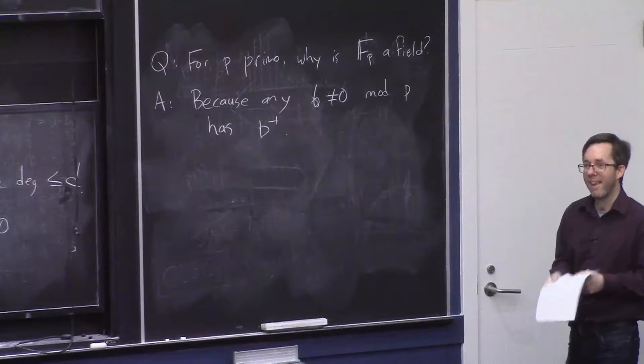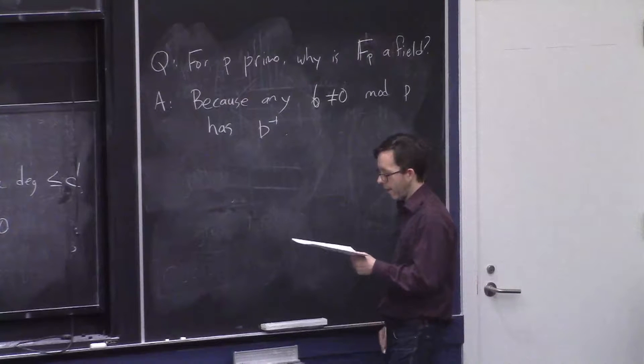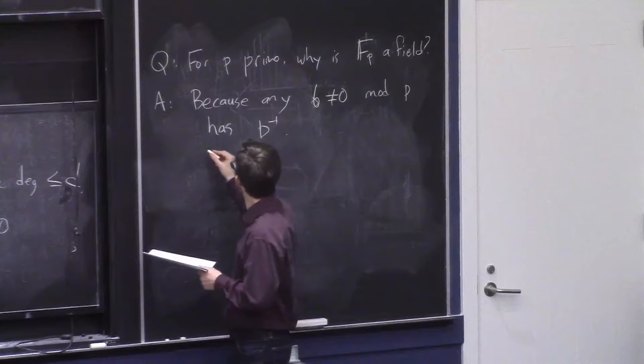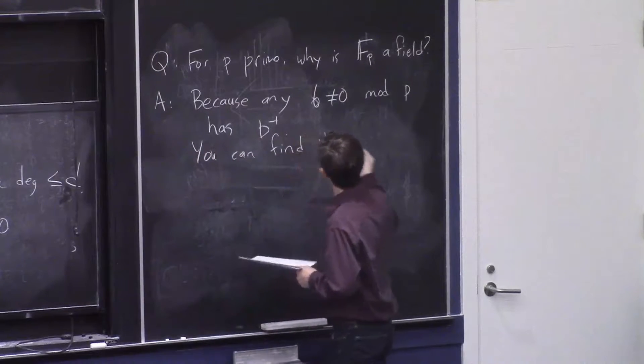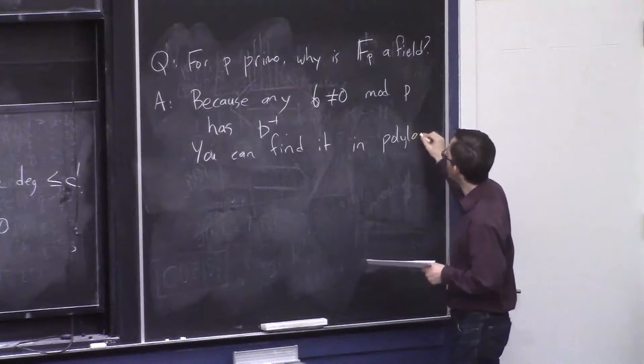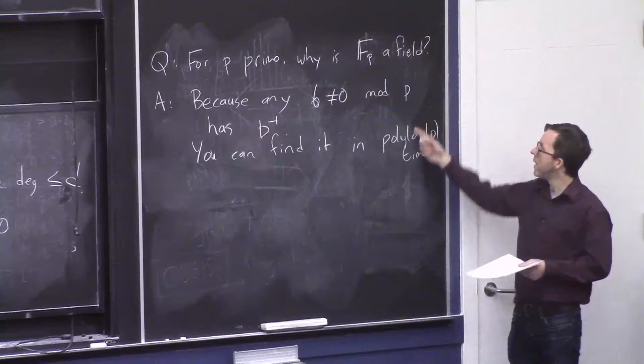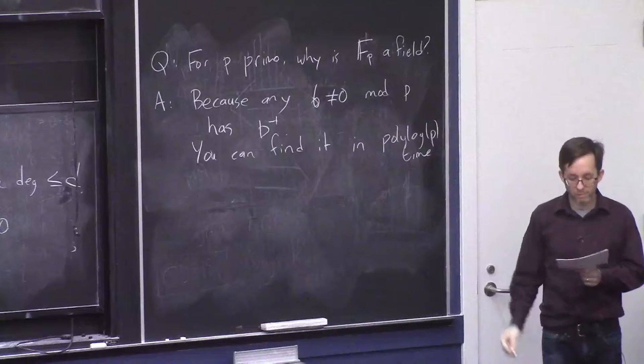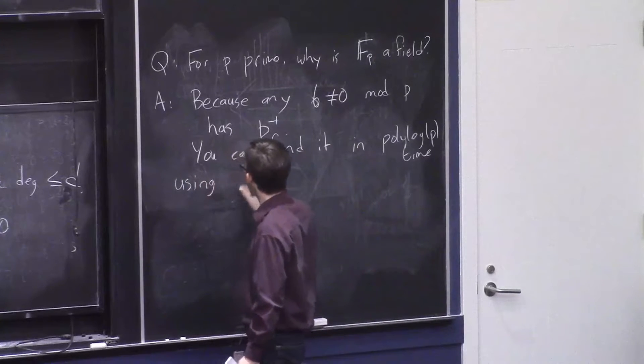Euclid's algorithm. Yes, that's right. That's what I was going for. So given such b, you can find it efficiently. So efficiently means poly log p time. Because the numbers mod p are numbers that you can write down with log p bits. So poly log p means efficient, using Euclid's algorithm, or the extended GCD algorithm.